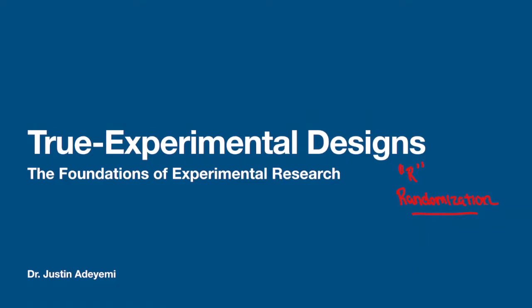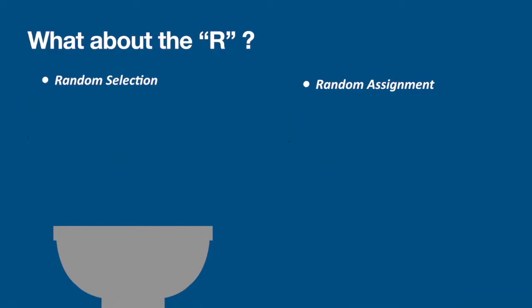Let's take a moment to look at the first type of information we'll need to truly understand what we mean when we talk about the R. We've already established that R stands for randomization, but if we want a better understanding of what randomization is, we really need to look at two terms and define them: random selection and random assignment.